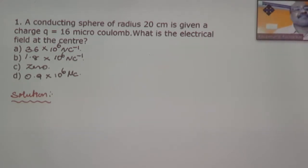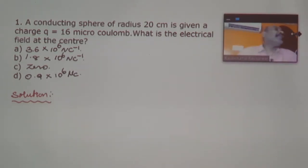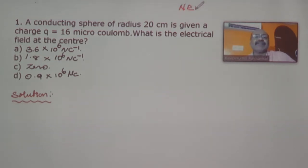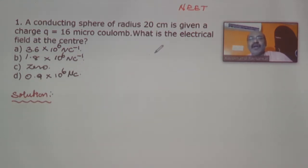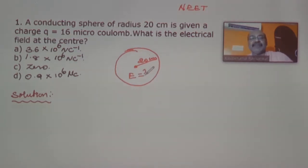Welcome students. This is part two of our competitive exam question papers. The first question asks: a conducting sphere of radius 20 centimeters is given a charge q equal to 16 micro coulomb. What is the electrical field at its center? So you are having a conducting sphere, radius given as 20 centimeters, and at the center you are asked to calculate the electrical field.